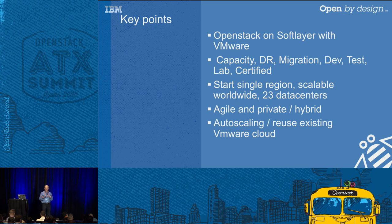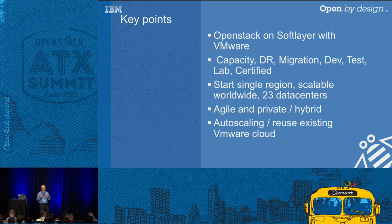Another key point was that we wanted to start in a single region and be able to scale worldwide. SoftLayer has 23 data centers — you can start VMs in Mexico and end up in Melbourne. All those capabilities, particularly when connecting all the different hypervisors, help in expanding the realm of your OpenStack cloud.